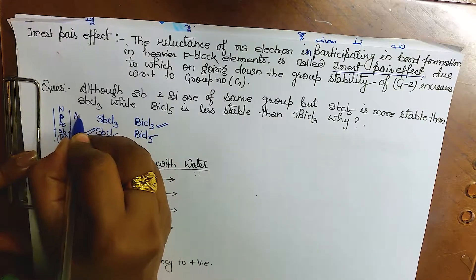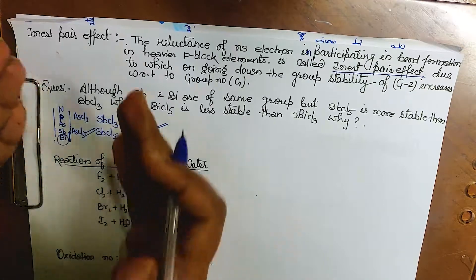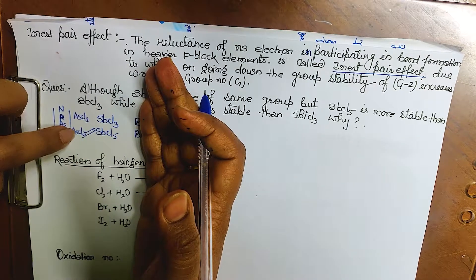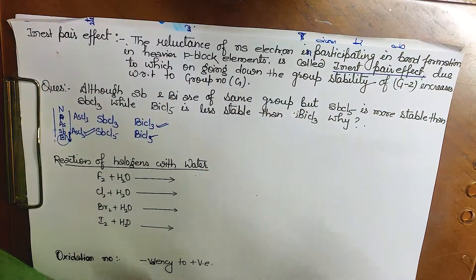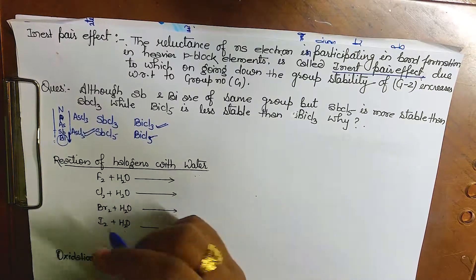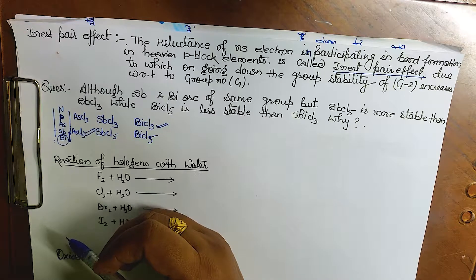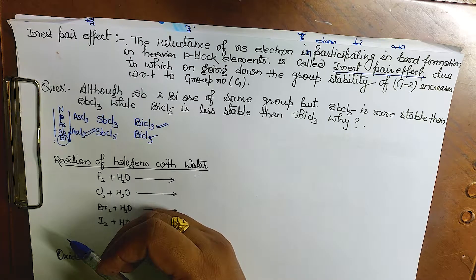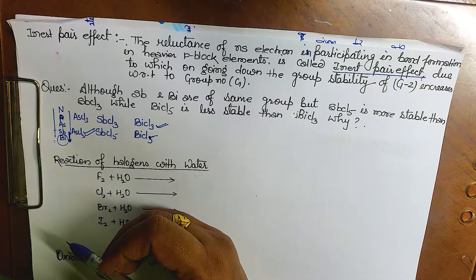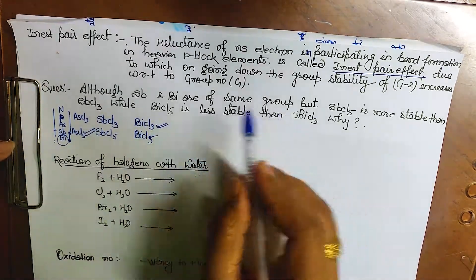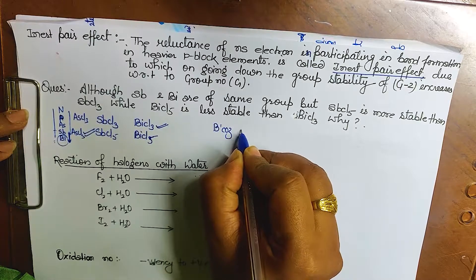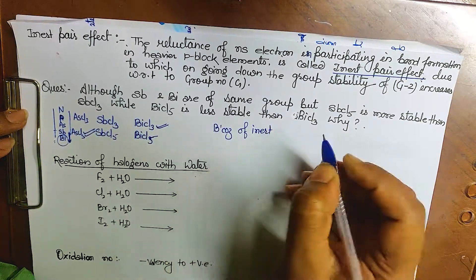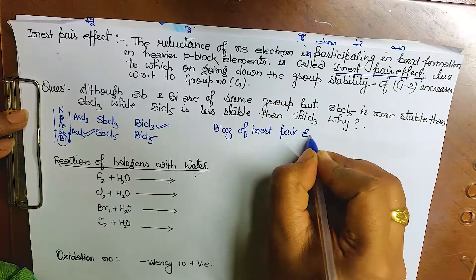Similarly, if asked about AsCl3 vs AsCl5, AsCl5 would be more stable and AsCl3 less stable. Questions can be asked in this comparative form. We need to understand which are the heavy p-block elements. For the 14th group, examples are Sn and Pb; for the 15th group, Sb and Bi; for the 16th group, Se and Te. If asked, explain the Inert Pair Effect definition and its consequences.